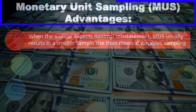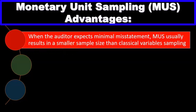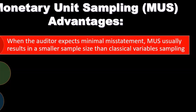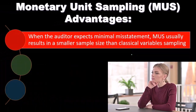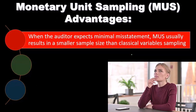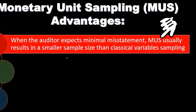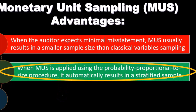Advantages of monetary unit sampling (MUS): when the auditor expects a minimal misstatement, MUS usually results in a smaller sample size than classical variable sampling. This is a benefit because it results in less testing — if we can get the results we need with a smaller sample, that's typically what we want to do.